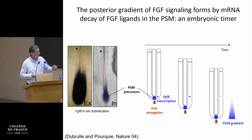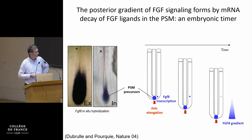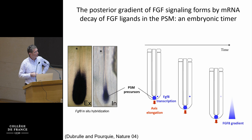Here you see an illustration of this gradient with the FGF-8 ligand, showing a high posterior to low anterior distribution. This is phospho-ERK, which is a response to FGF signaling, and nuclear beta-catenin, also enriched in the posterior end of the embryo. Interestingly, this gradient is established not by a classical source-and-sink system, but by an RNA decay mechanism whereby only cells located in the tailbud in the NMP region transcribe the ligands important for establishing the gradient, such as FGF-8.